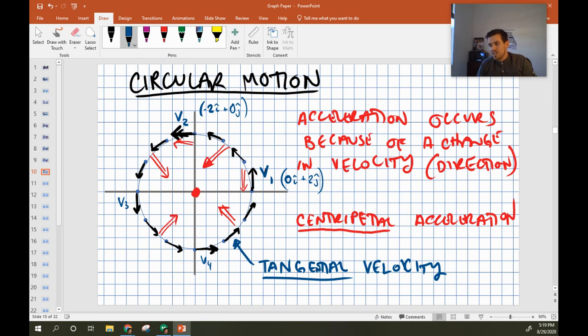Tangential velocity is the velocity along the edge of a curve that is parallel to the curve. So all of these arrows are meant to be parallel to the curve at those points, and they're called tangential velocities.